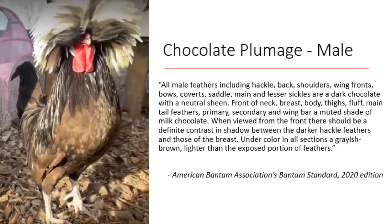The standard's description of chocolate calls for males to show a dark chocolate color with a neutral sheen in their hackles, back, shoulders, wing fronts, wing bows, coverts, saddles, and main and lesser sickle feathers in their tail. It also calls for a muted shade of milk chocolate in the front of their neck, breast, body, thighs, fluff, main tail feathers, primary and secondary feathers in their wing, as well as the wing bar. It states that there should be a definite contrast between the darker hackle feathers and the milk chocolate ones of the breast, and it calls for a grayish brown undercolor in all sections that is lighter than the exposed portion of the feathers.